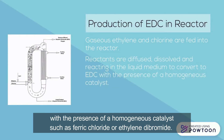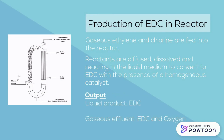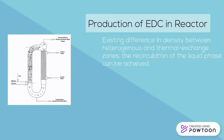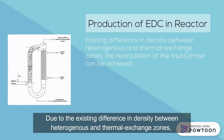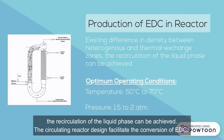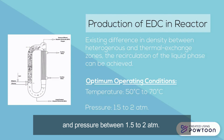The reactants convert to EDC with the presence of a homogeneous catalyst such as ferric chloride or ethylene dibromide. The liquid product is EDC, and the gaseous effluent contains EDC and oxygen, where oxygen enters the reactor as an impurity in the chlorine gas stream. Due to the difference in density between heterogeneous and thermal exchange zones, recirculation of the liquid phase can be achieved. The circulating reactor design facilitates the conversion of EDC, with optimum operating conditions of 50°C to 70°C and pressure of 1.5 to 2 atmospheres.